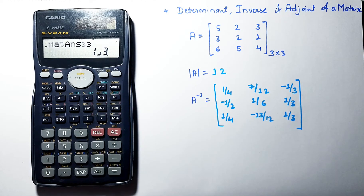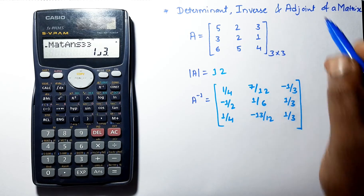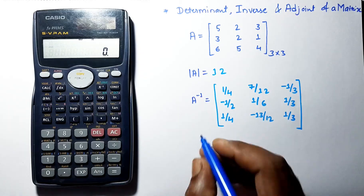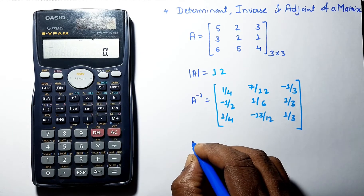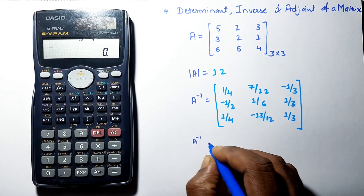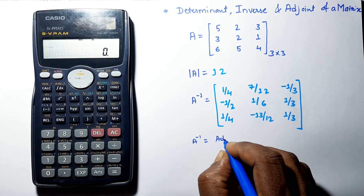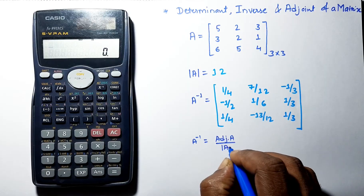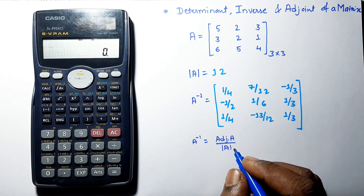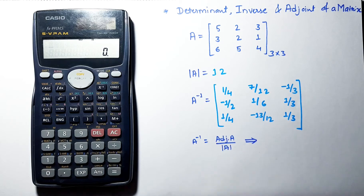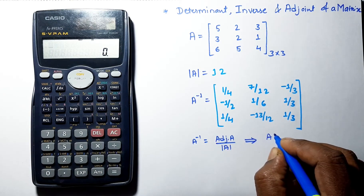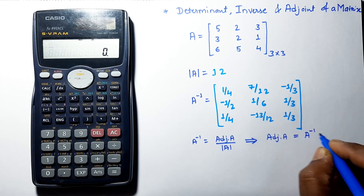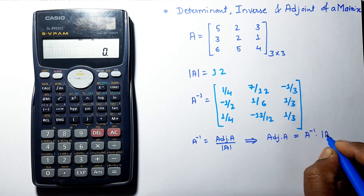Now let's find the adjoint of the matrix. We know that A inverse equals the adjoint of A divided by the determinant of A. From that, we know that the adjoint of A equals A inverse multiplied by the determinant of A.